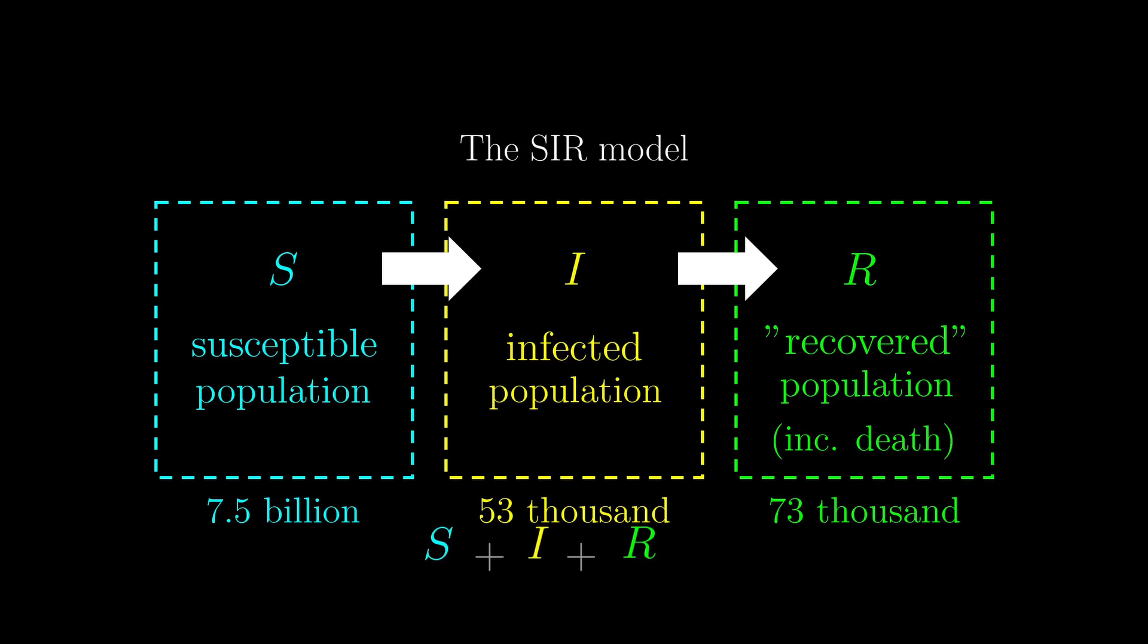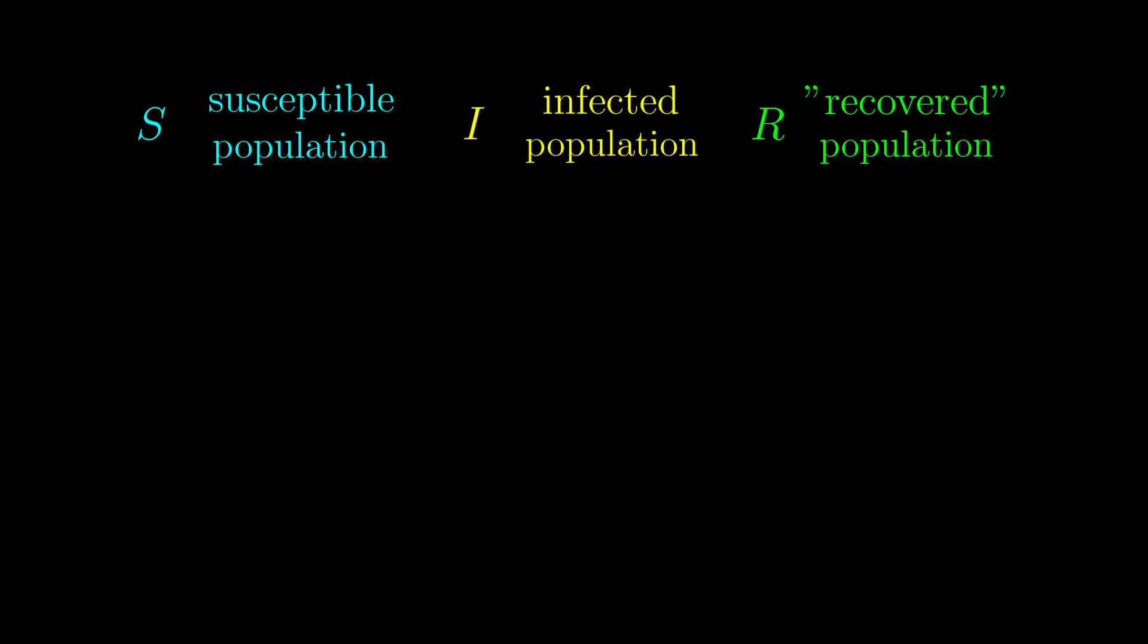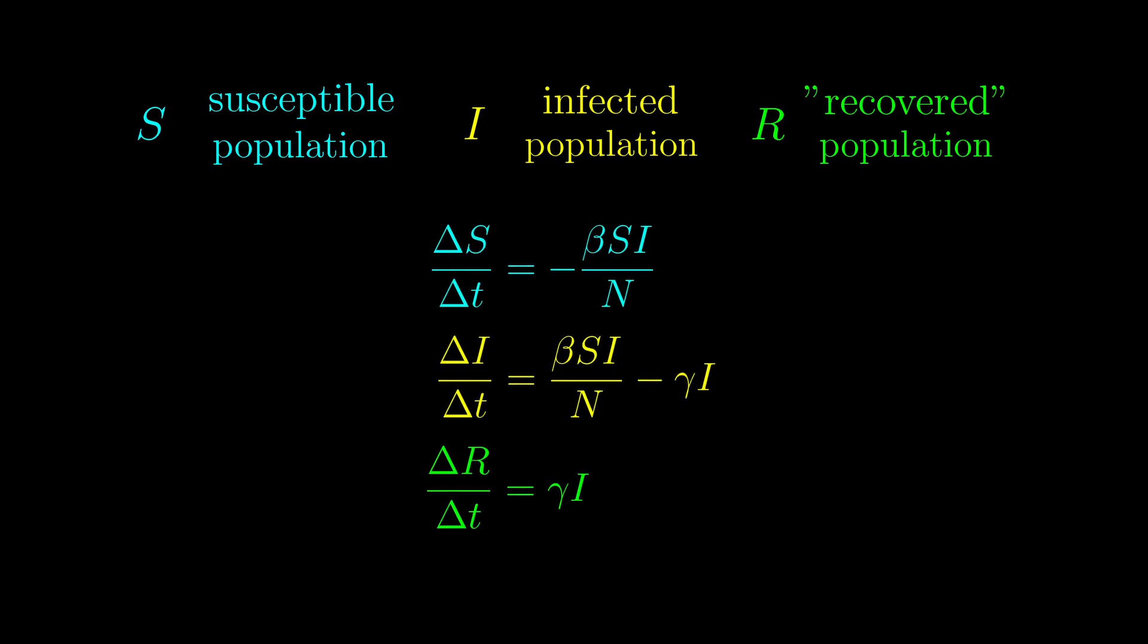We also have the sum of these populations to be N, the entire world population, and we take this to be roughly constant. The model relates the dynamics of S, I, and R by some simple equations. Here they are. It looks complicated, but it really isn't. These two terms are really the same, just with opposite signs. And these two terms are also different, only in signs.